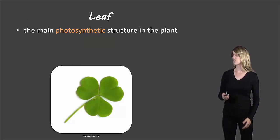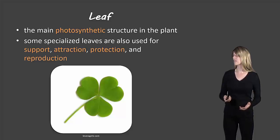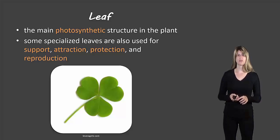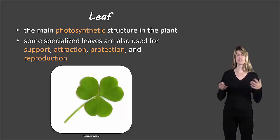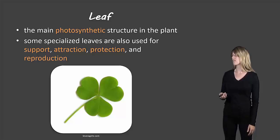The first is the leaf. This is the main photosynthetic structure in the plant. Some leaves also have other roles such as support, attraction, protection, and reproduction. So those are all roles that some leaves may possess, but all of them are really important for photosynthesis.